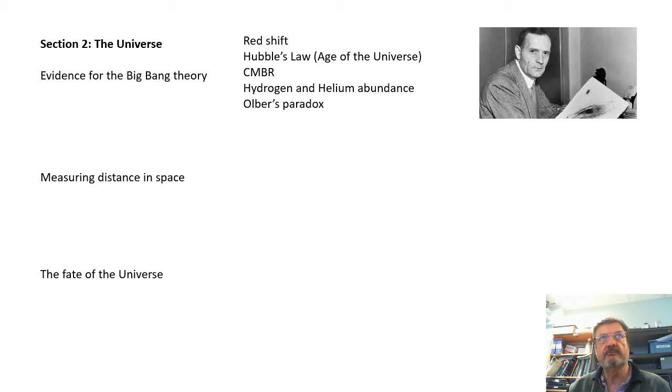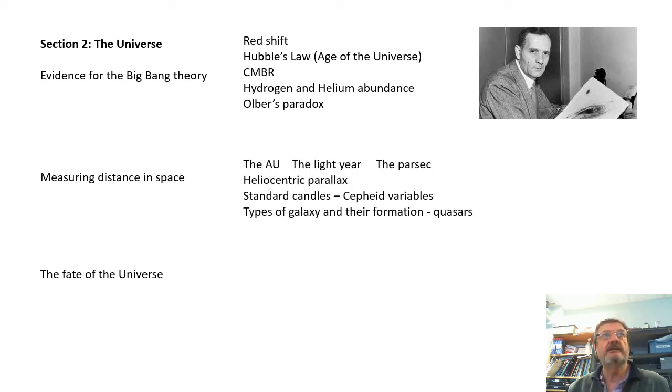Section 2 is about the universe. What evidence is there for the Big Bang? Explain redshift. What is Hubble's law? Show the graph of recession velocity against distance. How do we get the age of the universe from Hubble's graph? What is CMBR and how does it help support the Big Bang theory? The amount of hydrogen and helium in the universe is evidence for the Big Bang. What is Olbers' paradox?